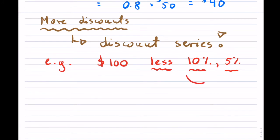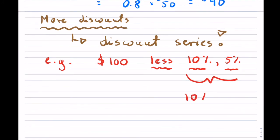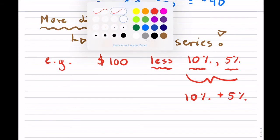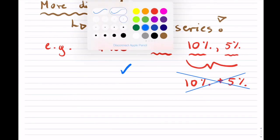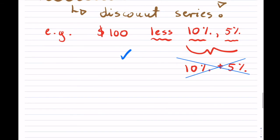Please do not make this error — and this is sometimes the biggest error when anyone learning this tries to add these discounts up. That is incorrect. You cannot add them. I'll show you in just a second what we actually do. If we have multiple discounts, what we like to do — and this could be done even with just the first single discount — is find something called a net price factor.